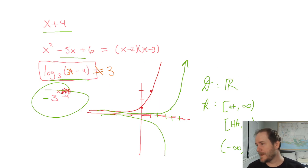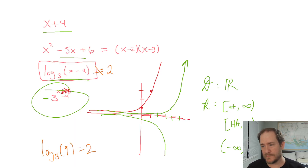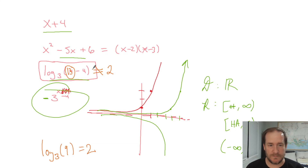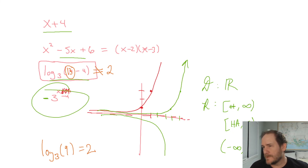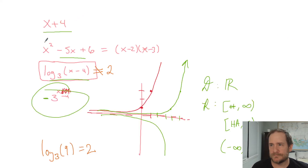One more example: what if you knew this couldn't be two? When would log base three equal two? That's the log base three of nine, which equals two. So when would x minus four equal nine? That would be at x equals 13. So 13 would be bad — you'd have to cut 13 out of your domain if this expression couldn't be two.